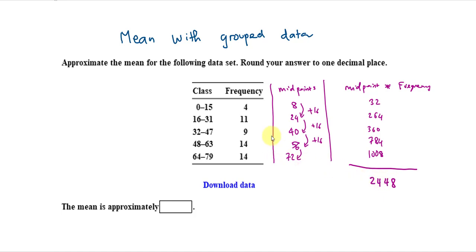Now, because we have the frequency, we also need to sum them all together. So, 4 plus 11 plus 9 plus 14 plus 14, that will give me 52.